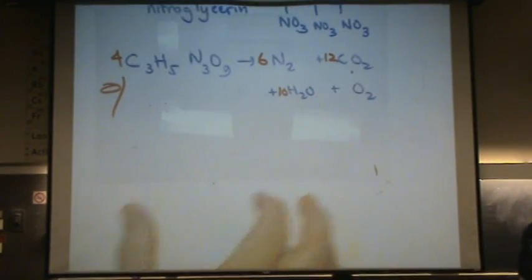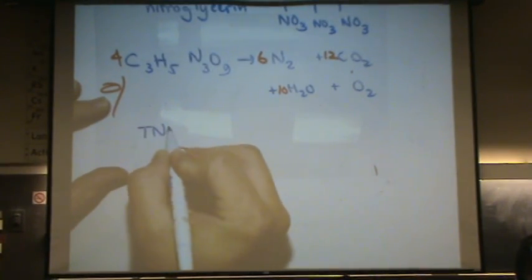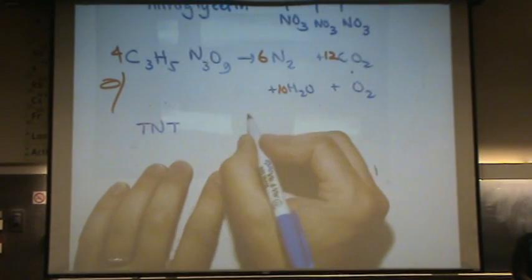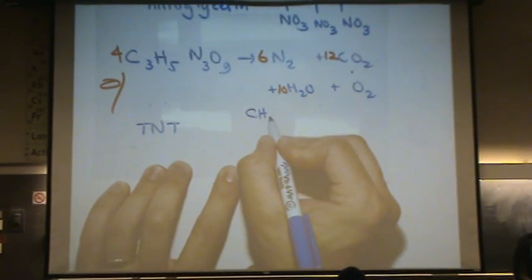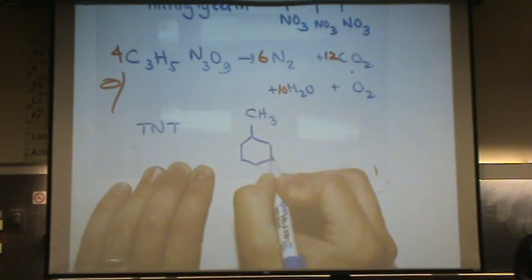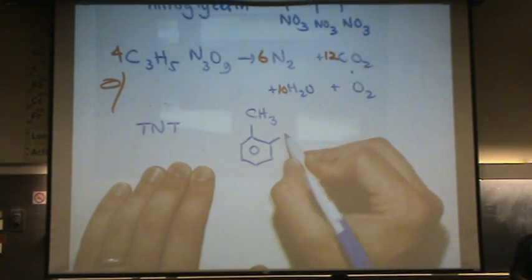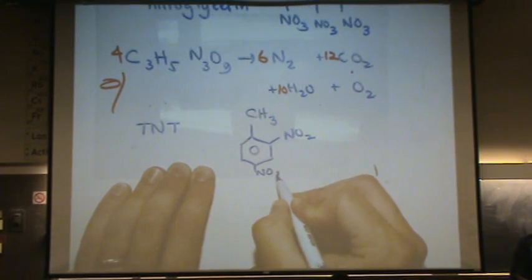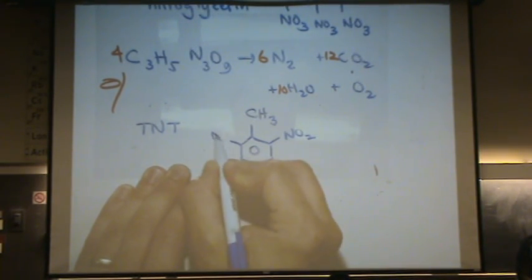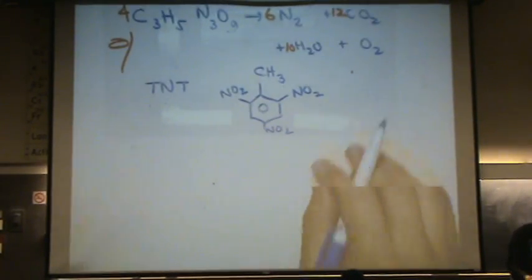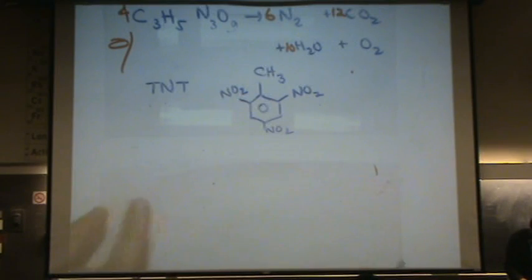Some other reactive molecules, TNT, which stands, you don't have to know what it stands for. You'll learn it in OCHEM, but it's trinitrotoluene. This is the toluene, and it has nitro groups. These nitro groups are NO2 instead of NO3. That's trinitrotoluene. I want to write this reaction as well, so you can see it.